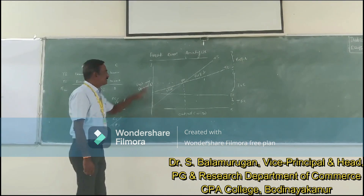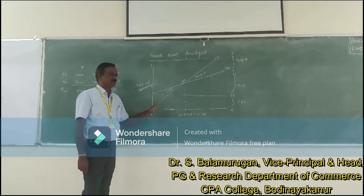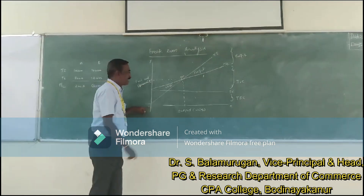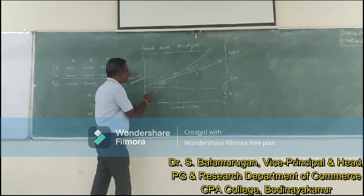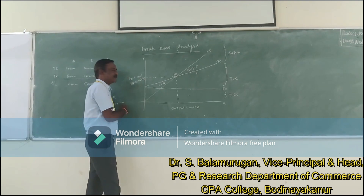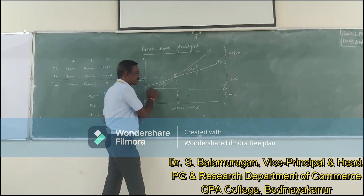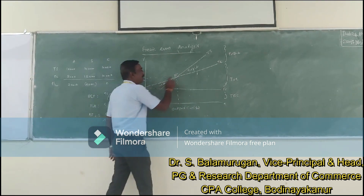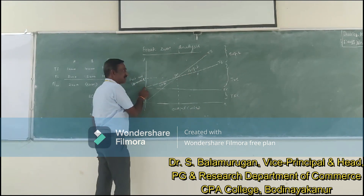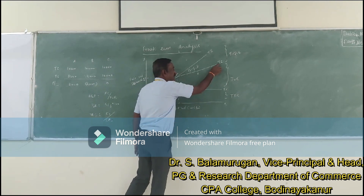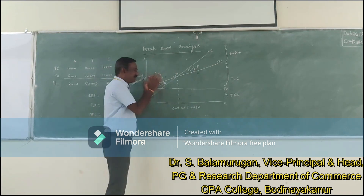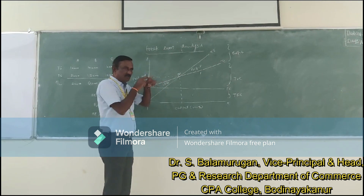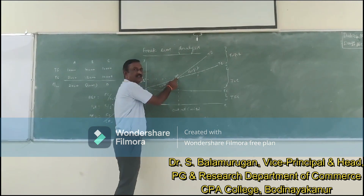Let us see the diagram. This is the break-even analysis, or we can say the break-even chart. This is the Y axis, this is the X axis, meeting at zero. The X axis represents units, and the Y axis represents cost and revenue in rupees. We have a line called fixed cost, and from the origin, the total sales line. Adding the variable cost to the fixed cost gives us the total cost. Ultimately, where total sales and total cost meet at one point — that area is called the break-even point.